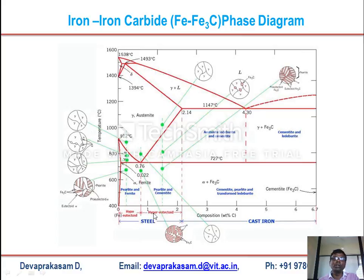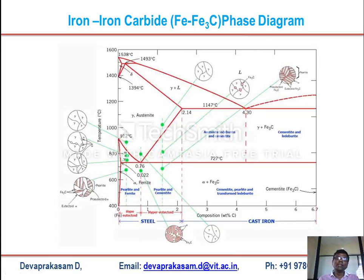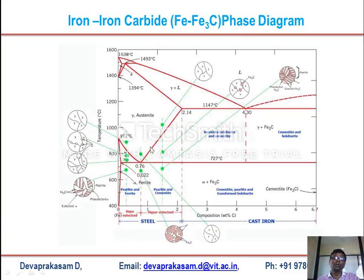Below the eutectoid composition of 0.76 weight% carbon is called hypo-eutectoid, and anything above 0.76 up to 2.14 weight% carbon is called hyper-eutectoid. Correspondingly, as temperature varies you will encounter many phases in this region.